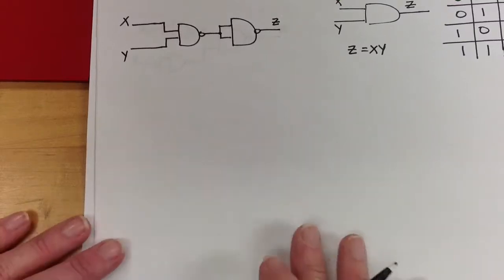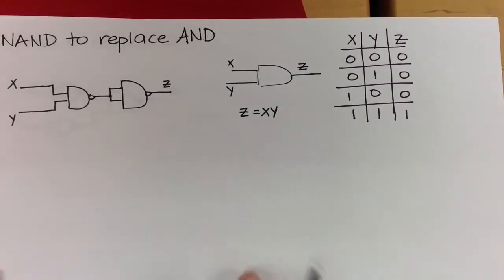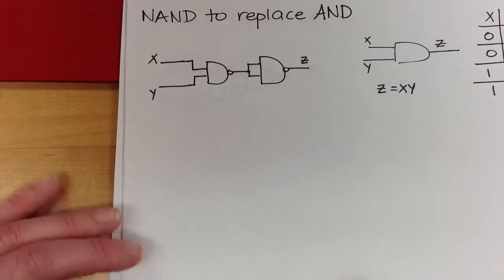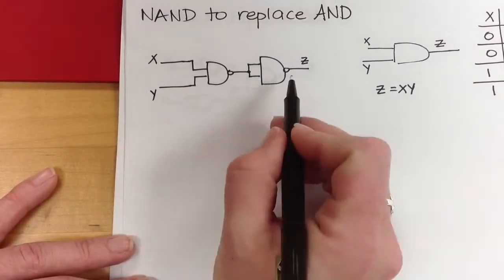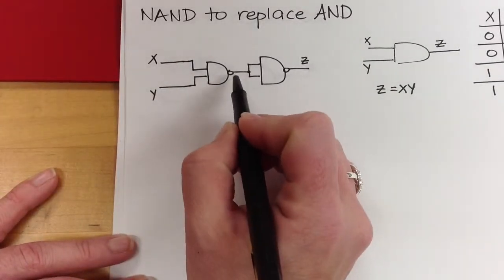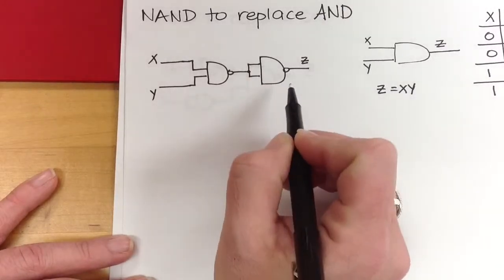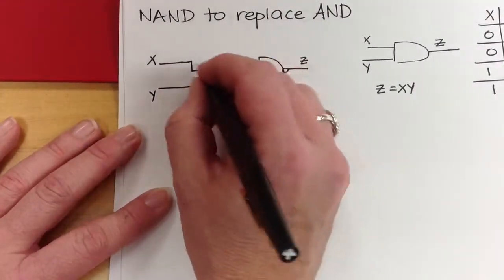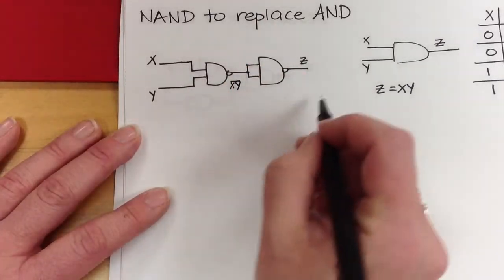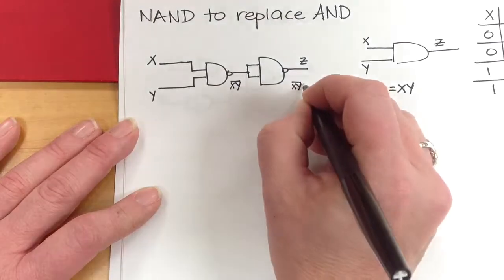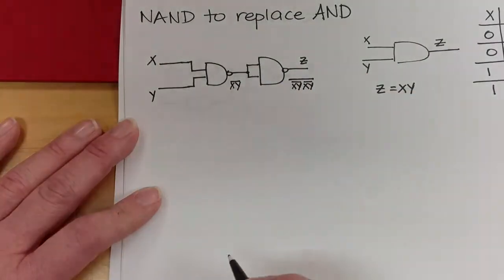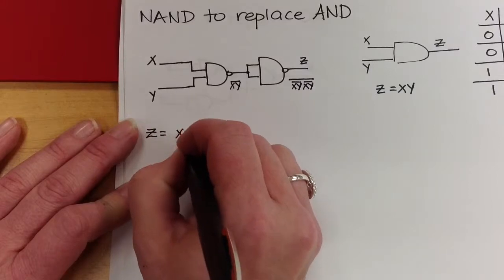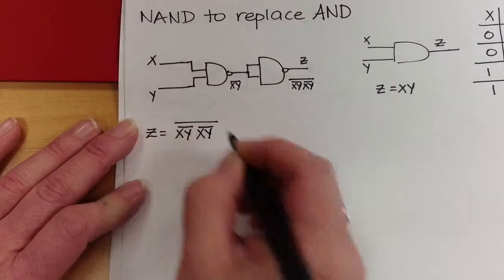Now let's look at using a NAND gate to replace AND. The AND truth table has zero everywhere except where you have 1 AND 1. The combination we use is: take X and Y into one input of a NAND gate, then take that output and run it into both inputs of a second NAND gate. So you have X AND Y with a bar, then that goes through the second NAND gate giving you X AND Y bar, X AND Y bar, with one bar over the whole thing.